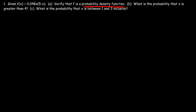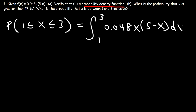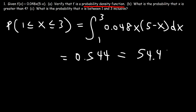Now for part C: what is the probability that x is between 1 and 3? This is just the definite integral from 1 to 3 of the function. Using a calculator, this equals 0.544, which represents a 54.4% chance that x is between 1 and 3.